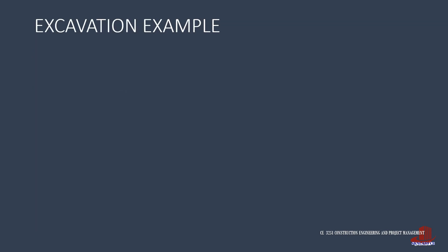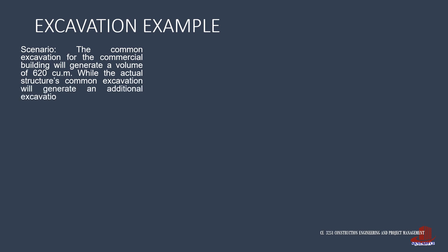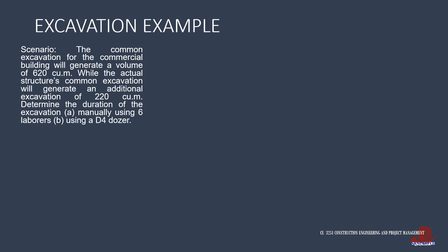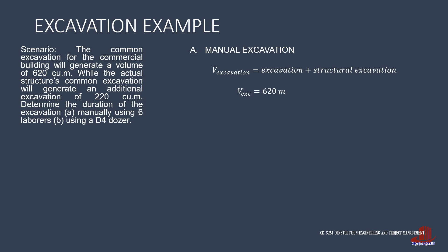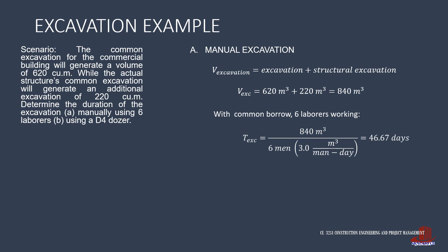Let us illustrate the computation of Item 102 through an example, which is a continuation of the previous scenario. The commercial building requires a common excavation of 620 cubic meters and structural excavation computed as 220 cubic meters. Starting with manual excavation, the total volume adds 620 plus 220 cubic meters, which is 840 cubic meters. With pure soil or common borrow and 6 laborers working, the duration is 840 cubic meters divided by 6 laborers at 3 cubic meters per man per day, yielding 46.67 days.